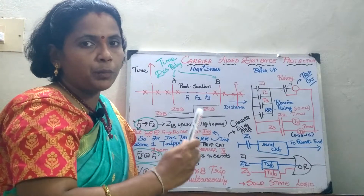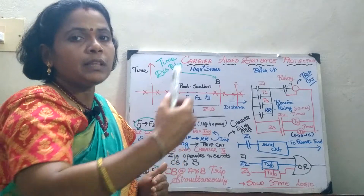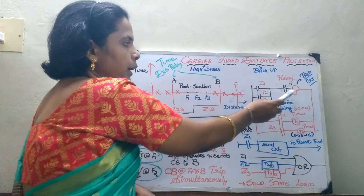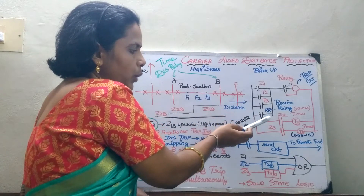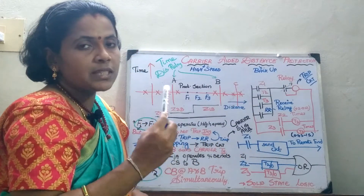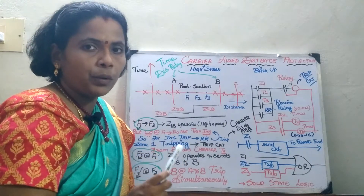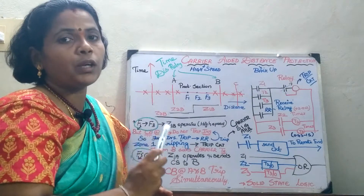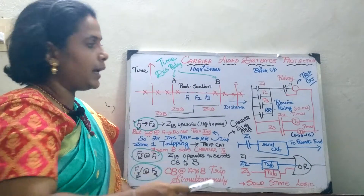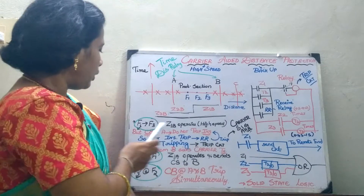Usually the first zone protects 80 to 90 percent of the line, the second zone protects the remaining part of the first zone and 50 percent of the adjacent line, and Z3 is used as backup protection. Z1 will operate immediately and trip the circuit, whereas after a time delay T2 and T3, Z2 and Z3 will work. A receive relay is used to send the carrier signal either from A to B or from B to A, to aid the simultaneous opening of circuit breakers at both ends — which is not achieved by distance relay alone.